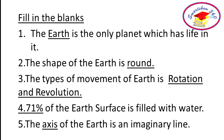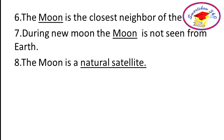Next, question 5. The axis of the Earth is an imaginary line. Question 6. The moon is the closest neighbour of the Earth. Question 7. During the new moon, the moon is not seen from Earth. Answer: it is the moon.